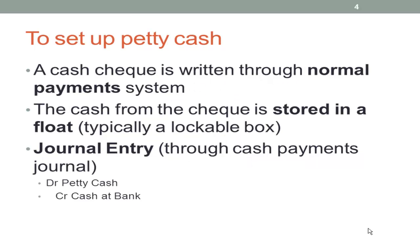Setting up the Petty Cash system: a cash cheque is written through the normal approval process — signed and approved at the appropriate level of authorization. The cheque is cashed and the money is placed in the float, typically a lockable box. The journal entry made through the normal system would be: debit Petty Cash (an asset), credit Cash at Bank (an asset). The total assets don't change — you're simply moving cash from your bank into the tin.